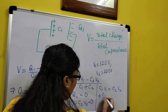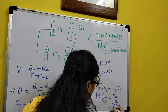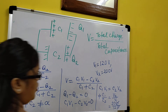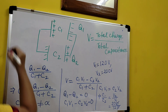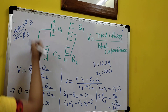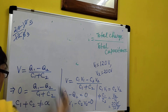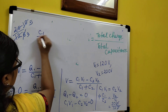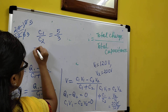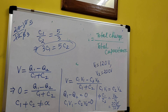Therefore, C1 / C2 = V2 / V1 = 200 / 120 = 5 / 3. So the relation is 3C1 = 5C2. This is the condition when charging at 120 volt and 200 volt makes the total potential after connection equal to 0.